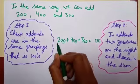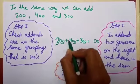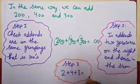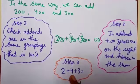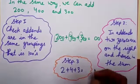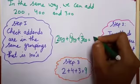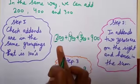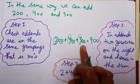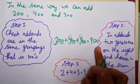Now I will add 2, 4, and 3. 2 plus 4 plus 3: 2 plus 4 equals 6, 6 plus 3 equals 9. So I will write 9 here. The sum is 900. 200 plus 400 plus 300 equals 900.